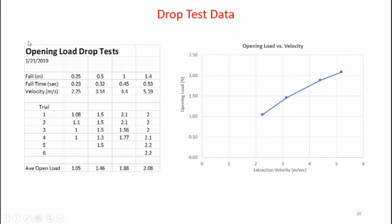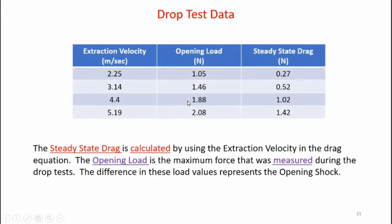Here's the data from all the drop tests. I have the free fall distances — 0.25, 0.51, and 1.4 meters — the measured fall times, and using those two values I can calculate the deployment velocity during parachute opening. Here's the load data I collected for each of the trials, and here are the average opening loads for each of those deployment velocities. I plotted that data on an XY plot showing extraction velocity and opening load. Here are the opening loads for each extraction velocity and here's the steady state drag for each of the parachutes at those velocities. The steady state drag is calculated using the extraction velocity in the drag equation. The difference in these load values represents the opening shock.